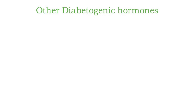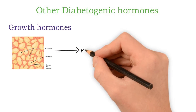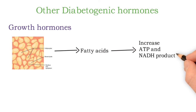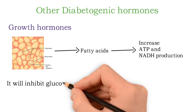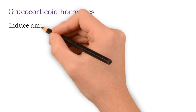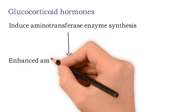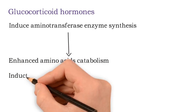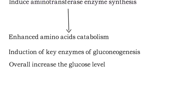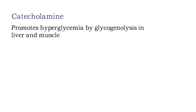Other diabetogenic hormones include growth hormone, glucocorticoids, and catecholamines. Growth hormone promotes fatty acid mobilization from adipose tissue, leading to increased fatty acid oxidation and ATP and NADH production, which inhibits glucose utilization in glycolysis and the TCA cycle. Glucocorticoid hormones induce aminotransferase enzyme synthesis, enhancing amino acid catabolism, and also induce key enzymes of gluconeogenesis, overall increasing glucose level. Catecholamines promote hyperglycemia by stimulating glycogenolysis in liver and muscle.